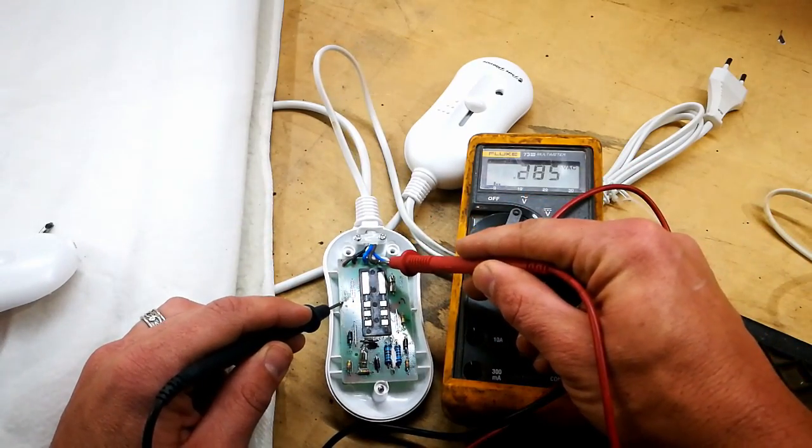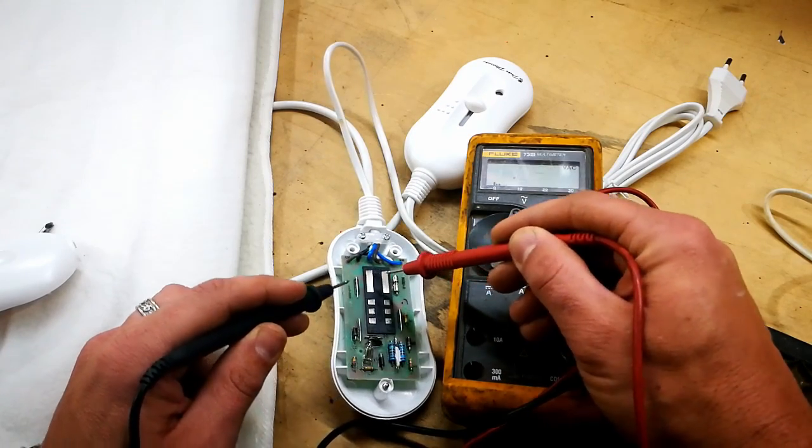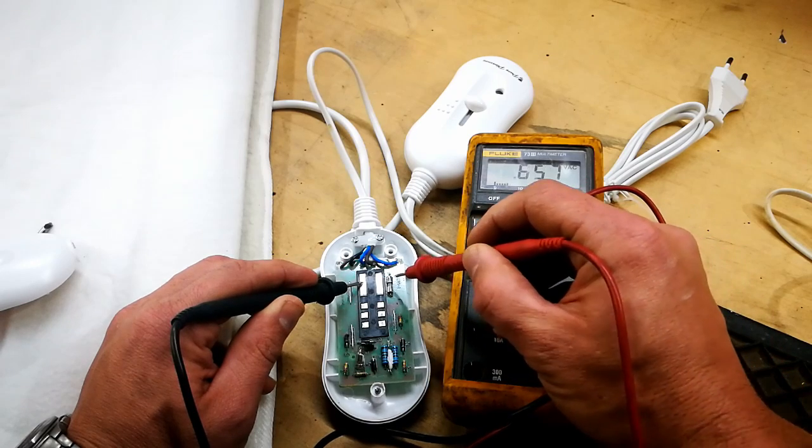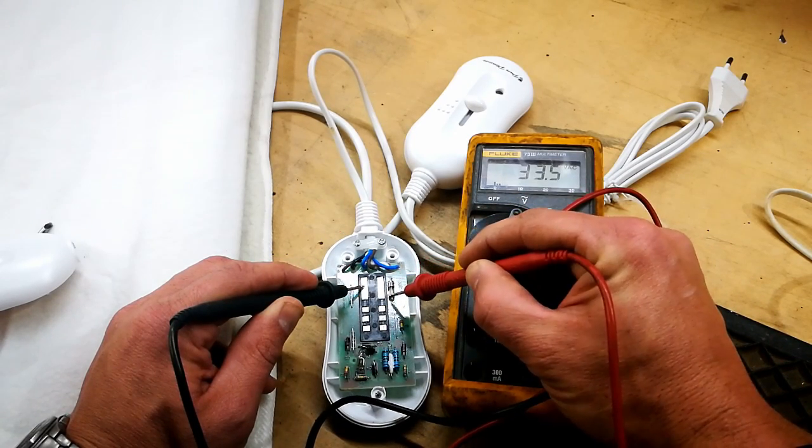So if you put it on the neutral and test on both sides of the fuse, if we get the same voltage on both sides of the fuse, we know the fuse is fine.